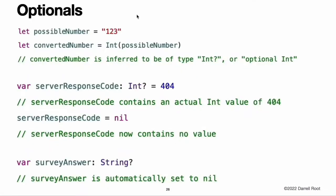Optionals. You use optionals in situations where a value may be absent. An optional represents two possibilities: either there is a value, and you can unwrap the optional to access that value, or there is not a value at all.